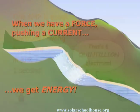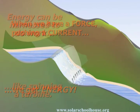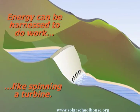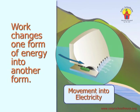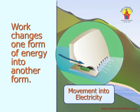We have a force, measured in volts, pushing a current of electrons, measured in amps, and this gives us energy. Energy can be harnessed to do work, like spinning a turbine in a hydroelectric dam. Work is an activity, like moving something, heating something, or powering something. Work changes one form of energy to another form of energy. There are several different forms of energy. The movement of water, for example, can work to turn a generator in a hydroelectric dam and generate electricity.